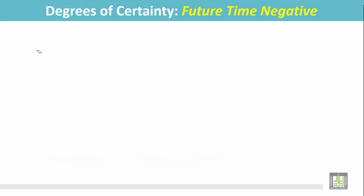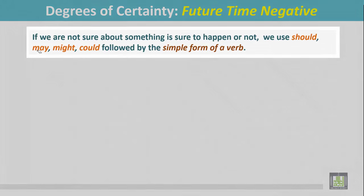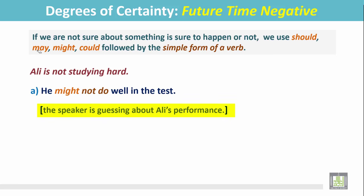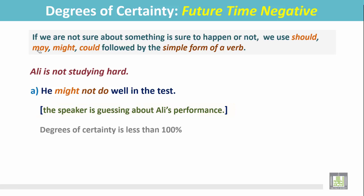Degrees of Certainty, Future Time, Negative: If we are not sure about something happening or not, we use 'should,' 'may,' 'might,' or 'could,' followed by the simple form of a verb. Example: Ali is not studying hard — he might not do well in the test. The speaker is guessing about Ali's performance, and the degree of certainty is less than 100 percent.